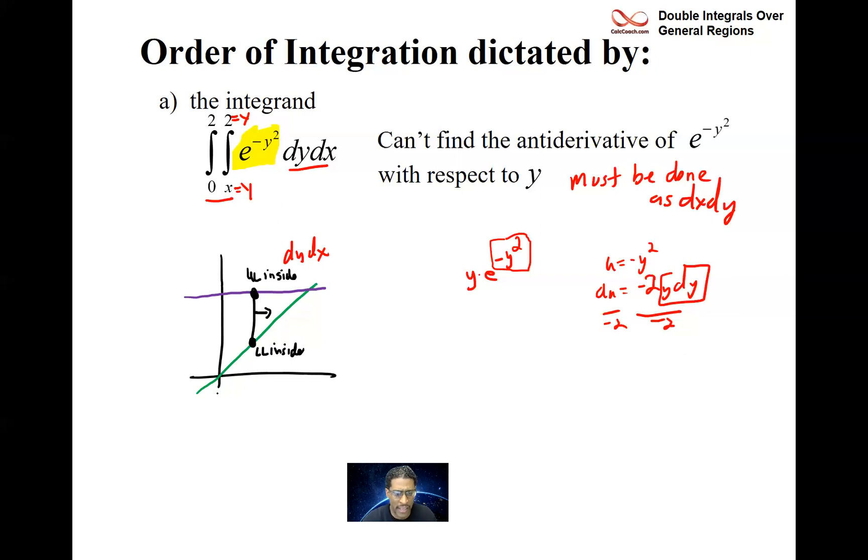And that works out for us that this is our region. Always double check and make sure. Start at zero and you'll be done by the time you get to x equals 2. So this is the dy dx which is not going to work. And then it'll be our job then to switch the limits.